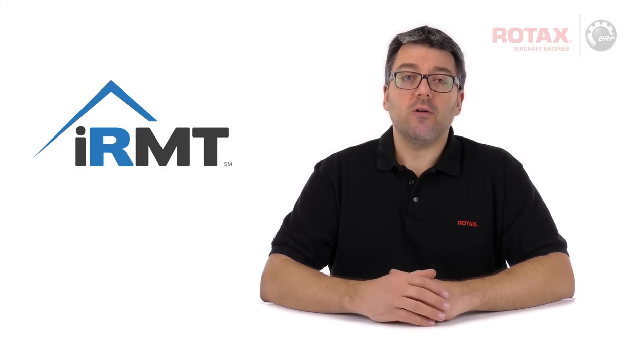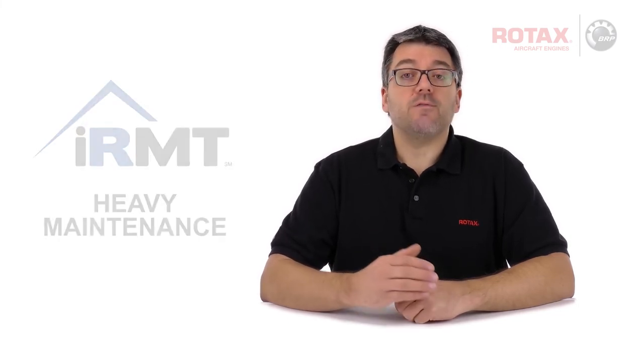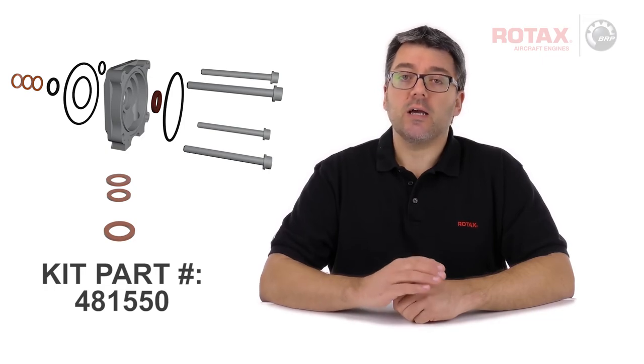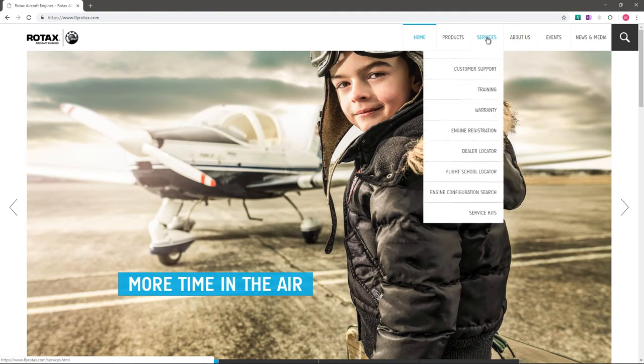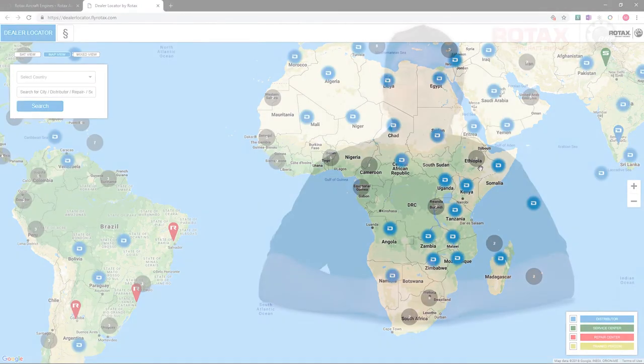The oil pump housing exchange must be performed by a Rotax approved distributor or service centre, or by an approved IRMT with current heavy maintenance rating. If the work is performed by a service centre or IRMT, parts and flat rate labour credit are covered by Rotax. Contact your local Rotax authorized distributor or their service centre for parts availability and labour credit application.